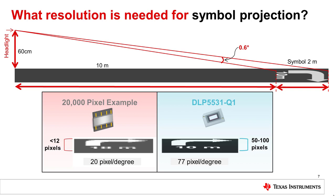In a typical design, the DLP 5531-Q1 DMD is able to use 50 to 100 lines of pixels to display this symbol due to its high pixels per degree, depending on the optical design. Other so-called high-resolution headlight technologies struggle with too few pixels for this level of detail.